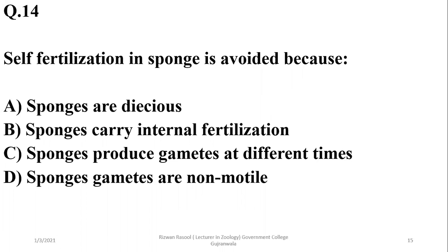Self-fertilization in sponges is avoided because sponges produce their gametes at different times. They are monoecious but still produce their gametes at different times. Usually they have protandrous condition—they produce male gametes first. So the right option is charlie.